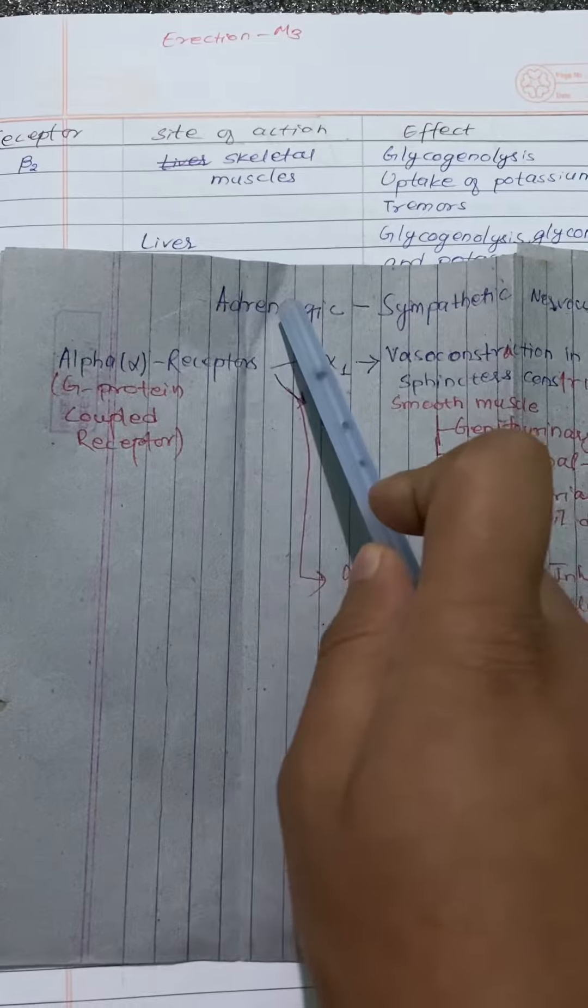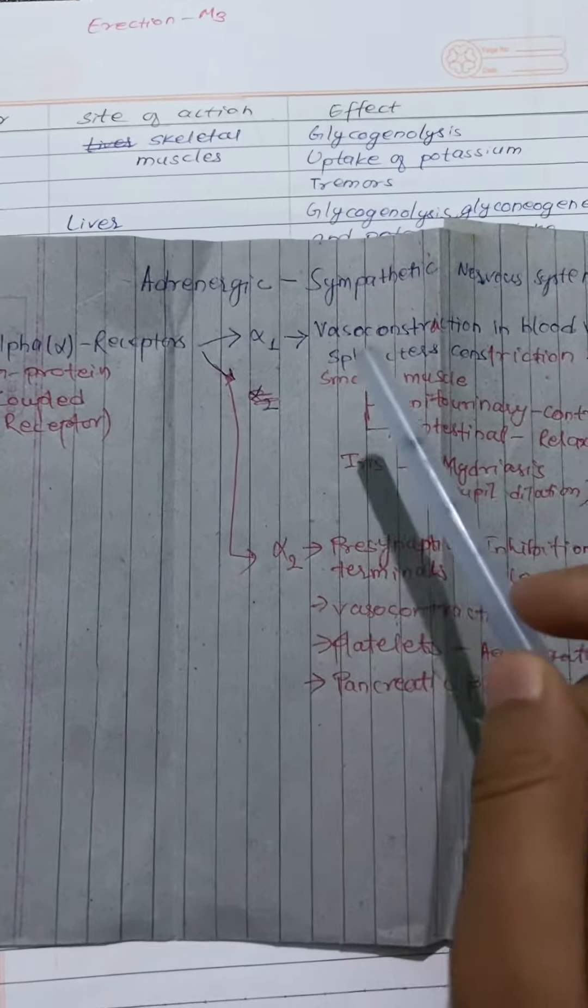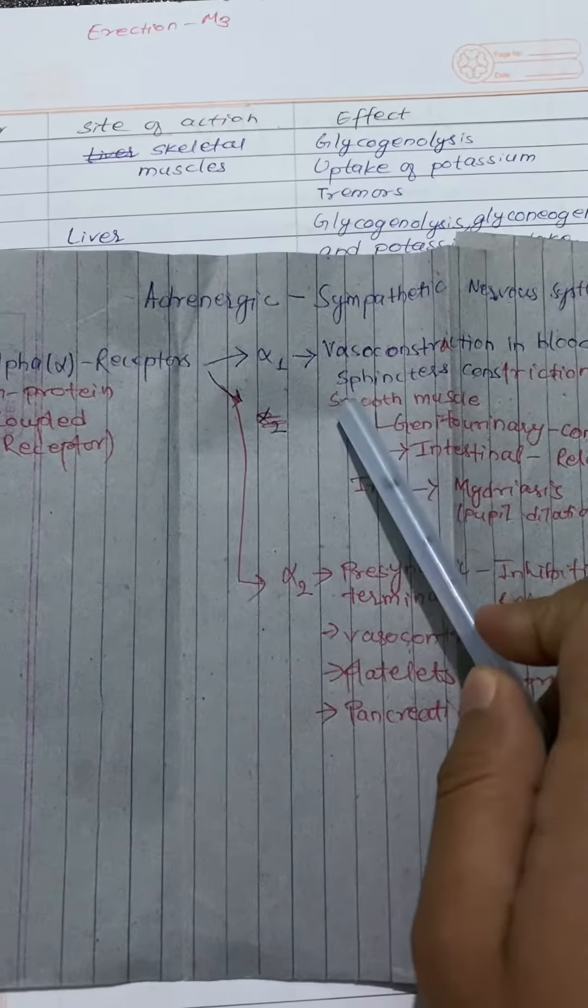Alpha receptors are a type of adrenergic receptor. It is a G-protein coupled receptor. It consists of two subtypes: alpha 1 and alpha 2.